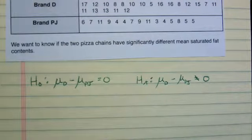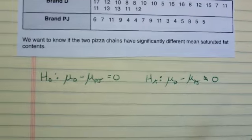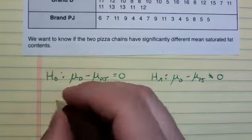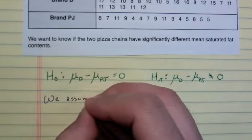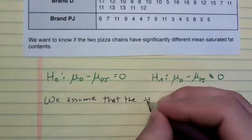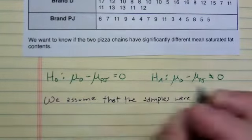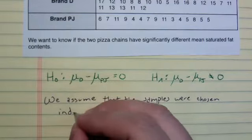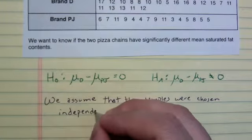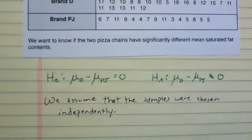So at this point I need to go ahead and check my conditions, and we get a little tricky here with the conditions because I didn't tell you anything in this problem about how I collected this data. So we're going to assume that the samples were chosen independently. In my tireless quest to make sure that you have the highest quality statistics education, I went across the state sampling pizzas from multiple pizza restaurants. It's a tough job, but I was willing to do it for you.